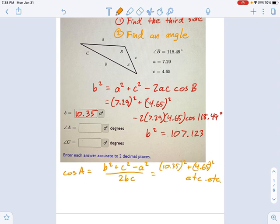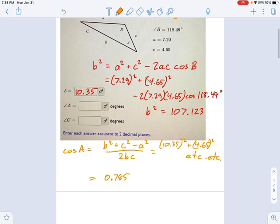You put those all in, and what do we get? We get cosine of all this equals something like 0.785, yada yada yada. And now I do the inverse cosine, and I say angle A equals inverse cosine of that ugly mess.